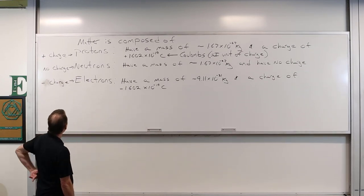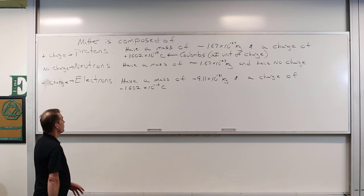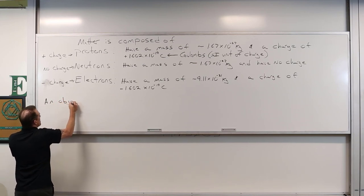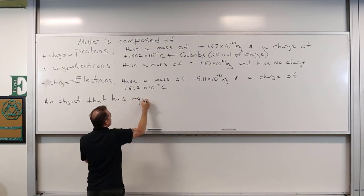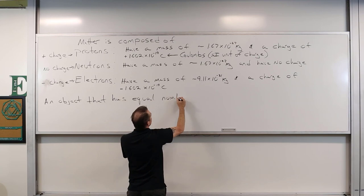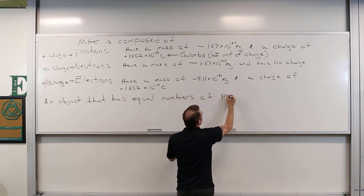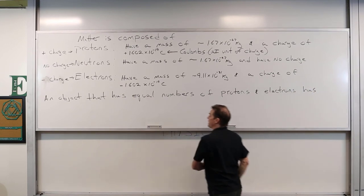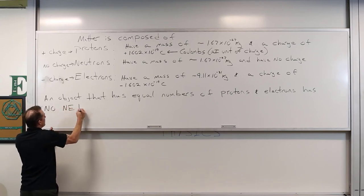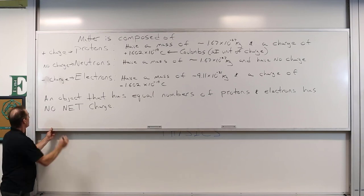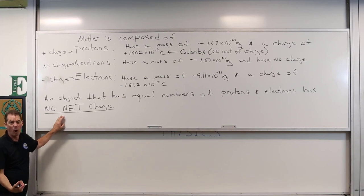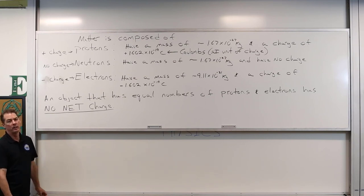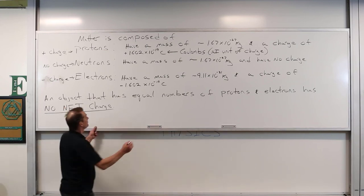An object that has equal numbers of protons and electrons has no net charge — the sum of all the charge equals zero. We can say it's electronically neutral. If an object has more protons than electrons, it has a net positive charge.